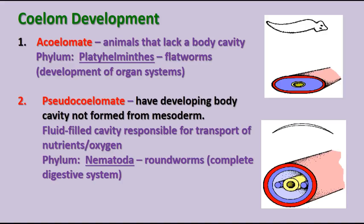The second, more developed type of animal is the pseudocoelomate. A pseudocoelomate has a developing body cavity that isn't formed from the mesoderm. As shown in the diagram, there's the mesoderm layer and then a fluid-filled cavity surrounding the endoderm. That fluid-filled cavity, the pseudocoelom, is responsible for transporting nutrients and oxygen throughout. This body plan is found only in phylum Nematoda, the roundworms. They have a complete digestive system with a mouth and anus, and a few more organs, with the digestive system being their most developed.